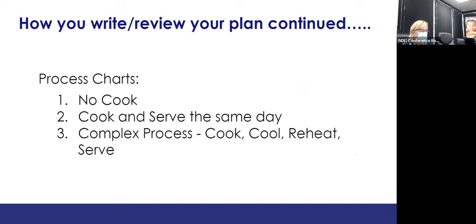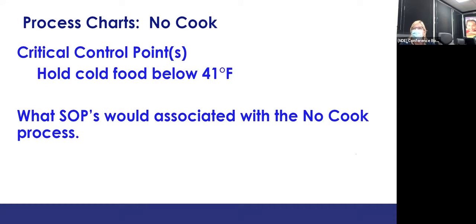Now let's talk about the process charts. We have three: the no-cook, the cook-and-serve same day, and the complex process — cook, cool, heat, and serve. The no-cook is fairly simple: it's anything you bring into your kitchen that is not cooked. You receive it and hold it at 41°F or below.